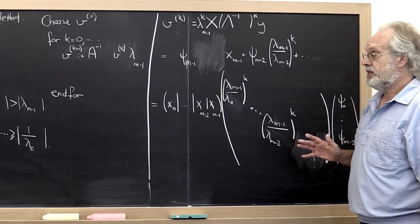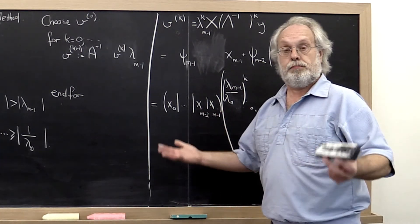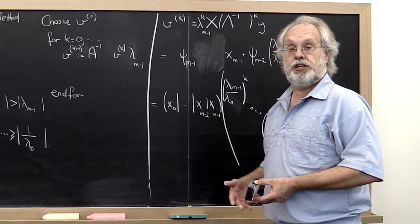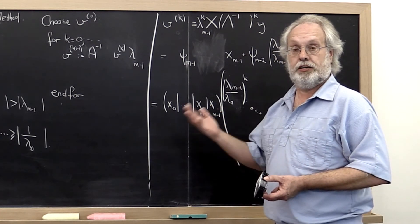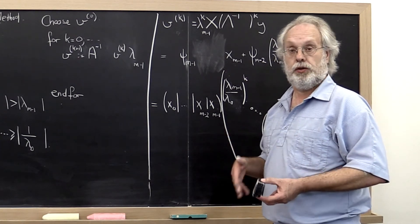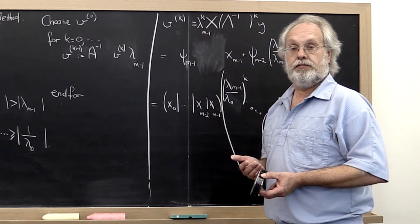So what we have now is the inverse power method, a method for finding the eigenvector associated with the eigenvalue that is smallest in magnitude of matrix A. And obviously once we have that eigenvector we can use the Rayleigh quotient to compute the corresponding eigenvalue.